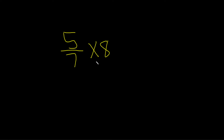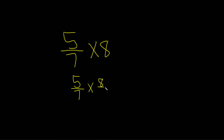Multiply 5 over 7 times 8. In order to do this, the first step is to write 8 as a fraction. So we can do that by doing the following: we'll keep the 5 over 7, we'll keep the times, and we'll write 8 as 8 over 1.